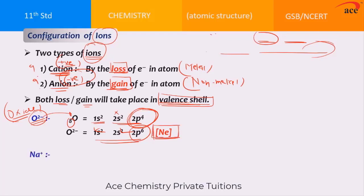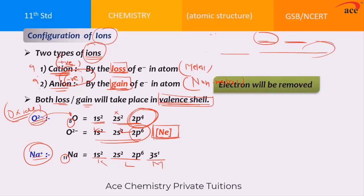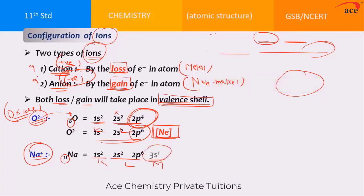Let us write the configuration for Na⁺, which is a cation. First, we should know the configuration of Na. Sodium has atomic number 11, so its configuration is 1s² 2s² 2p⁶ 3s¹ — the K shell, L shell, and M shell respectively. For Na⁺, there is a positive charge, so an electron is removed from the valence shell. The outermost orbital is 3s, so with loss of one electron it becomes 1s² 2s² 2p⁶.